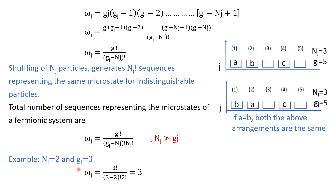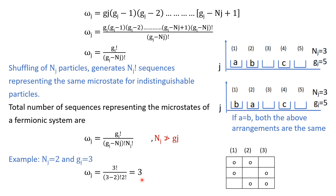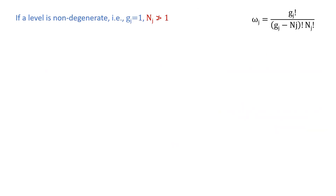Now take an example where I have two particles and three energy states. According to this formula I will have three possible distributions. I can put one particle here and one particle here; or one particle here and one particle here; or one particle here and one particle here. Keep in mind I cannot put two particles in one box, as that is not allowed by the Pauli exclusion principle. So this formula gives three, and the actual count is also three — this is the correct description for a fermionic system.